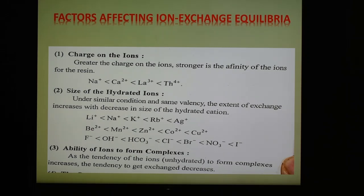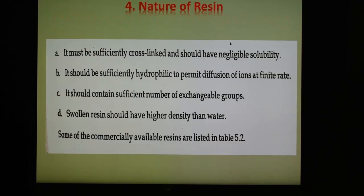The third factor is the ability to form complexes. When the tendency of an unhydrated ion to form complexes increases, the tendency for exchange decreases. The fourth factor is the nature of the resin. Absorption of ions depends upon the nature of the functional group in the resin. It also depends on the degree of cross-linking; as cross-linking increases, the resin becomes more selective toward the ion. A good resin should be sufficiently cross-linked, have negligible solubility, be sufficiently hydrophilic to permit diffusion of ions at a finite rate, contain sufficient exchangeable groups, and the swollen resin should have higher density than water.